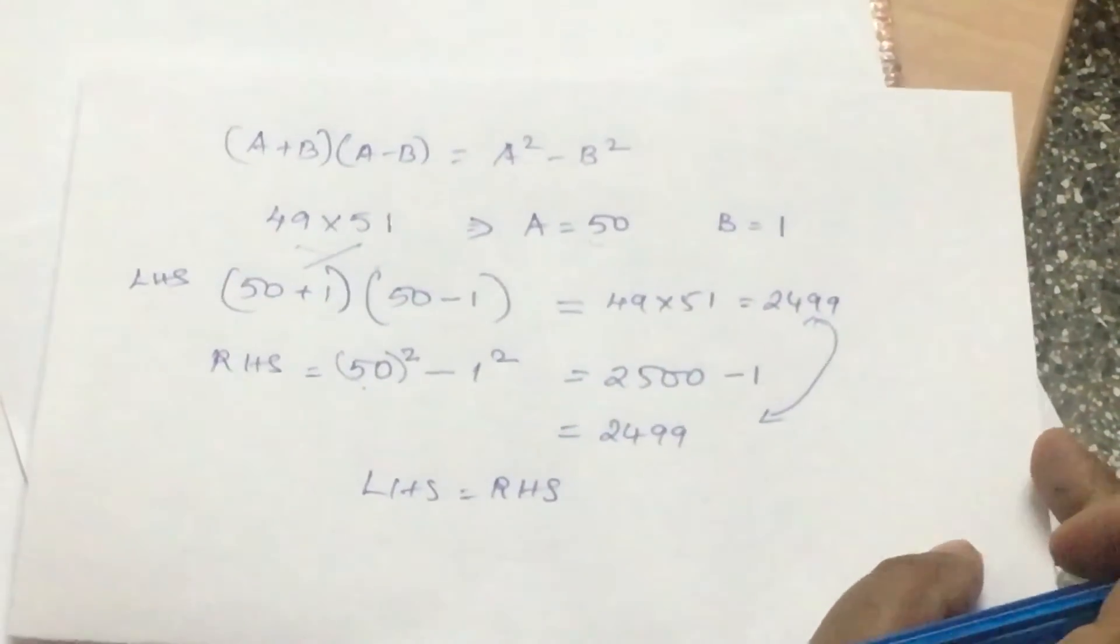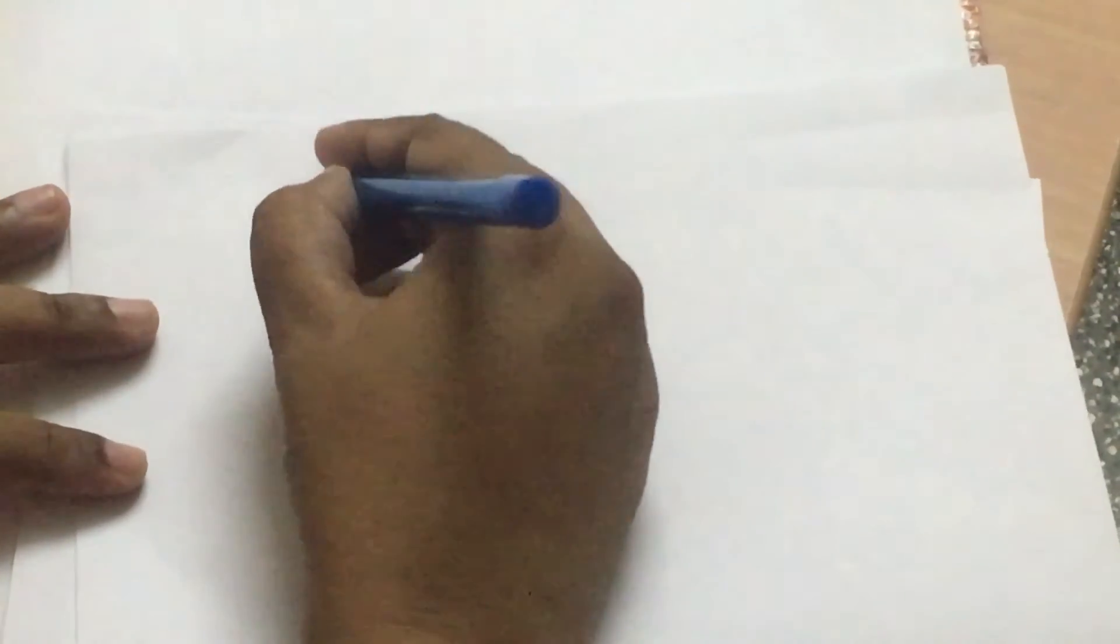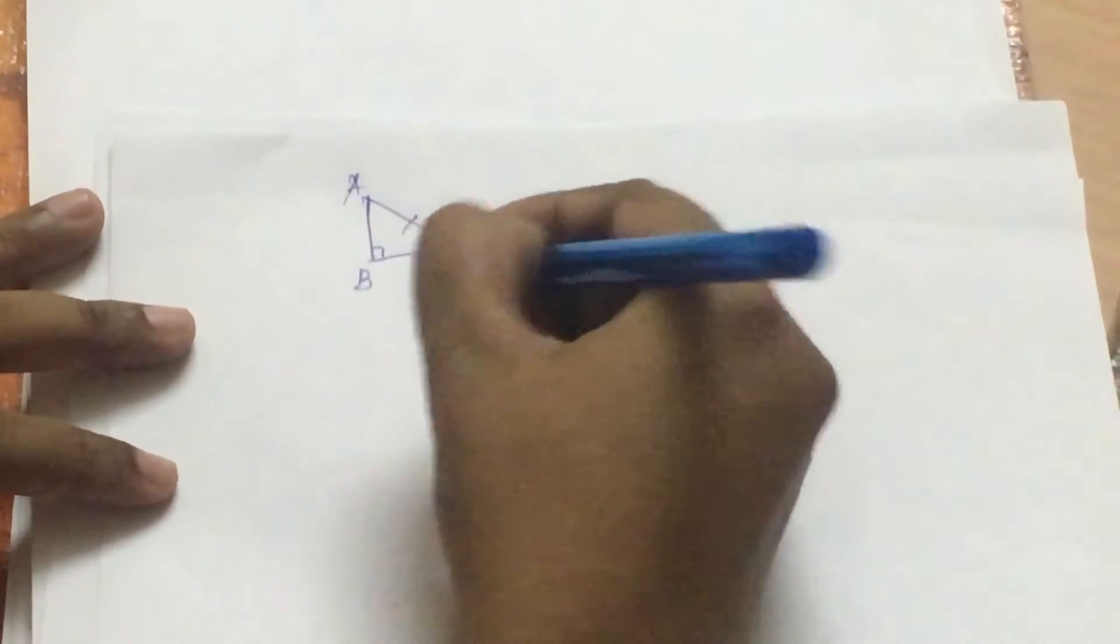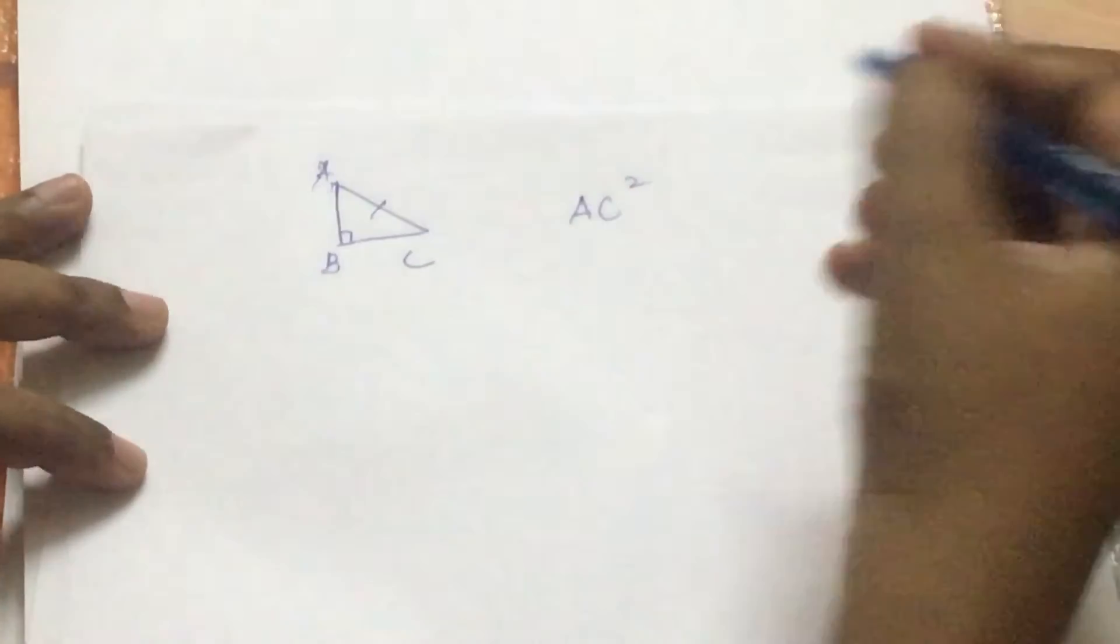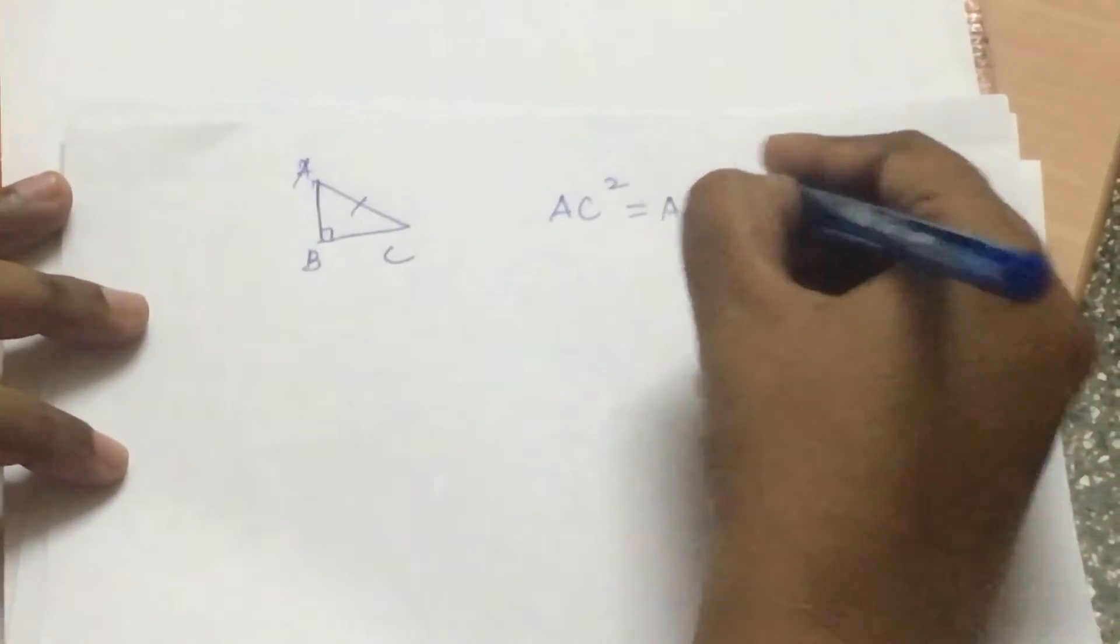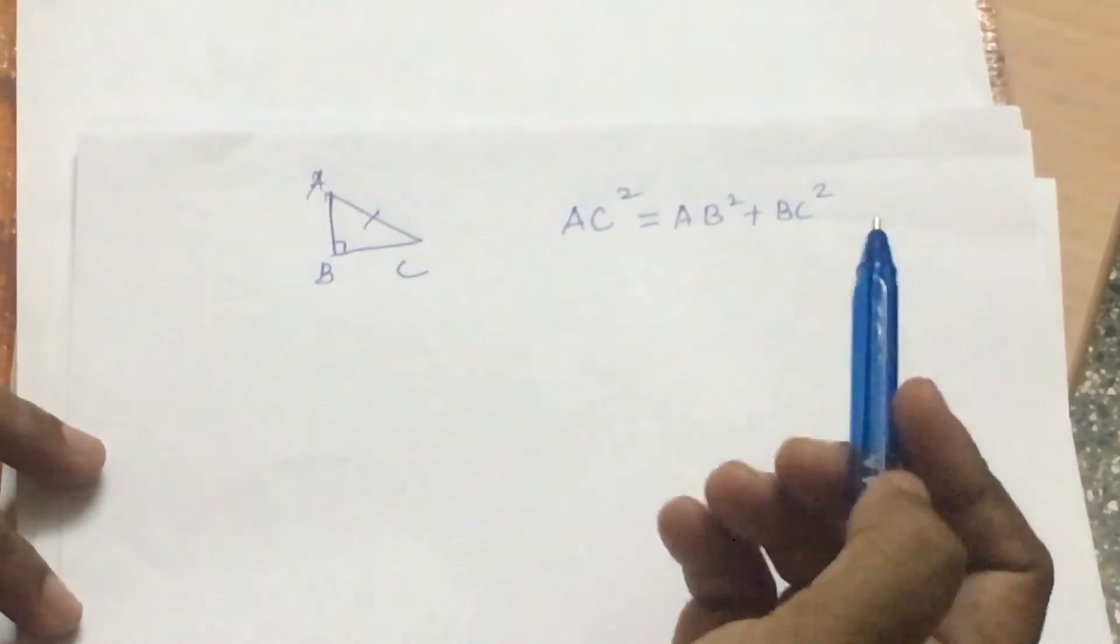Now, all of you would have come across something called the Pythagorean theorem. The Pythagorean theorem is, it's like you have a right triangle and this is the hypotenuse, let me label it a, b, c. According to the Pythagorean theorem, the square on the hypotenuse is equal to the sum of the square on the other two sides. Simply put, it's AC² = AB² + BC².